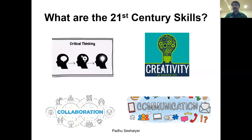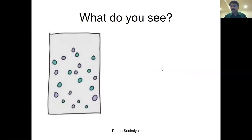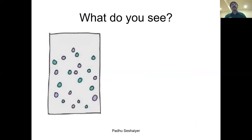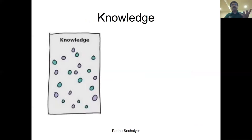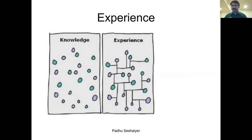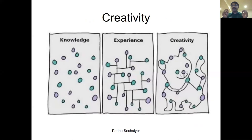If I flash a picture and say what do you see, most of you see colored dots. But somebody saw a cat — how? First you need to build knowledge: maybe these are cities on a map. From knowledge you can build experience: how are these connected? Someone saw a dog, someone saw a rainy day — I love the creativity. The idea is how do you go from a knowledge piece to a creativity piece? It's not easy.